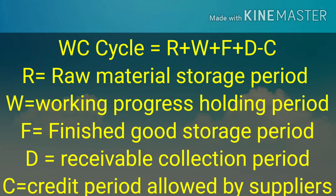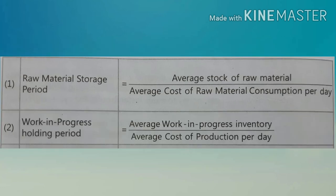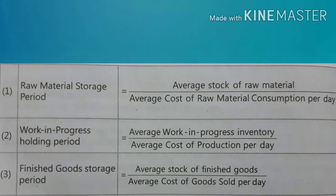Now let us find out the individual components of the formula. Raw material storage period = average stock of raw material ÷ average consumption per day. The raw material purchased today will only be used after the existing raw material in the warehouse is finished — the time taken for that is the raw material storage period. Similarly, the work in progress holding period = average work in progress inventory ÷ average cost of production per day.